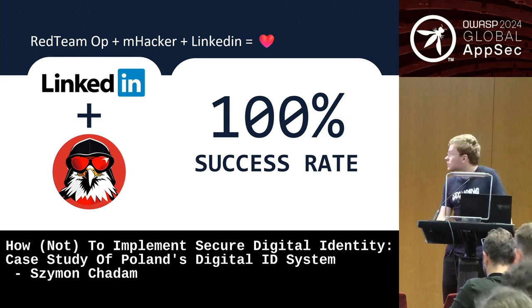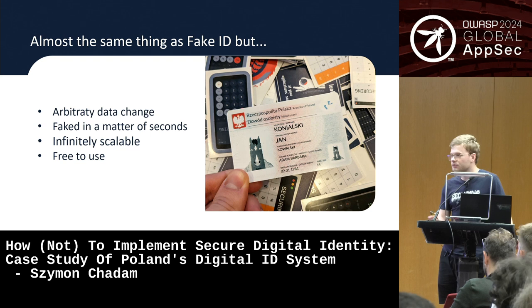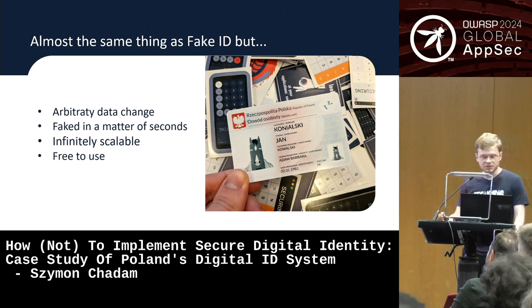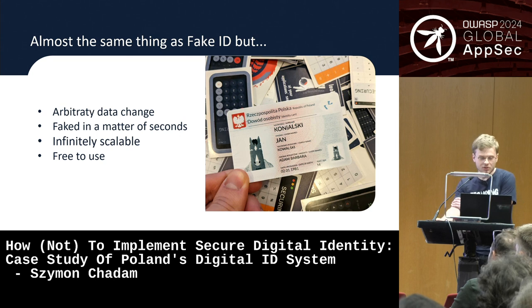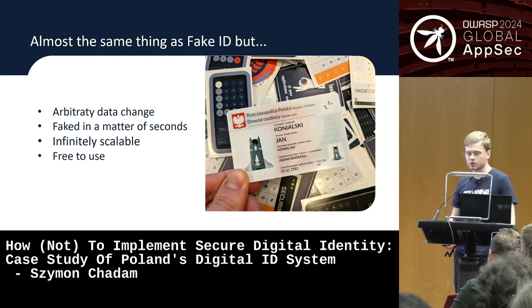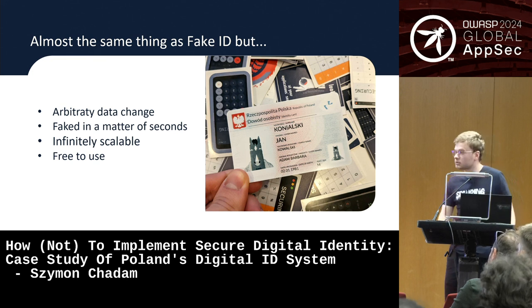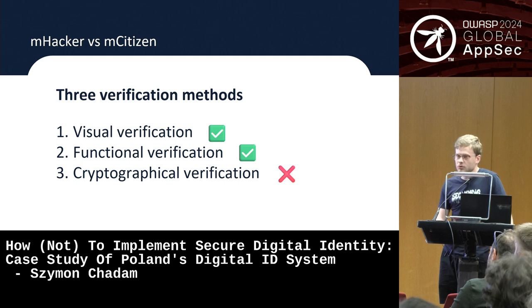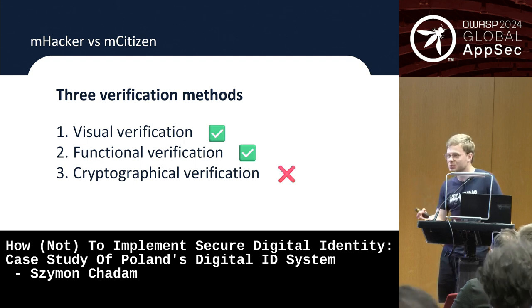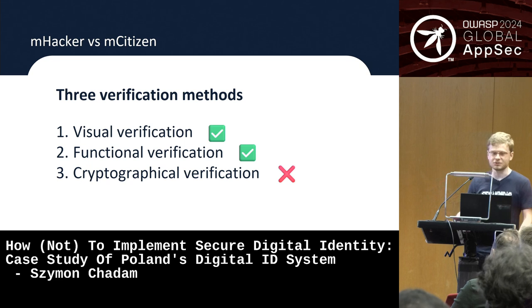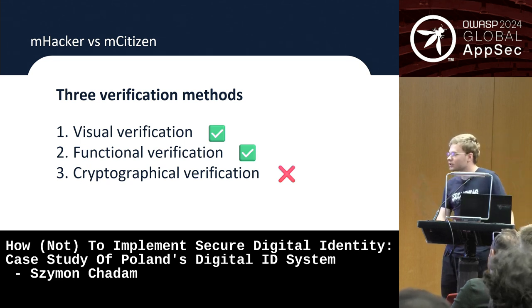What I'm showing you is essentially the same thing as a traditional fake ID, with a few differences. The main difference is you can fake the data in seconds without any third party involved like a manufacturer of fake IDs. You can change the data arbitrarily, it's basically free, and infinitely scalable — once you have a phone, you can use it as many times as you want. However, this method only works against the visual and functional verification — it won't work for cryptographic verification.